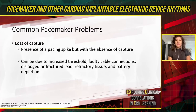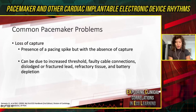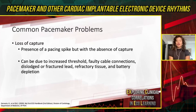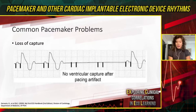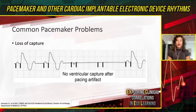The second troubleshooting example is loss of capture. Unlike loss of output where there is not even a pacing spike, in loss of capture you have a pacing spike but with the absence of depolarization. Possible causes include increased threshold, faulty cable connections, dislodged or fractured leads, refractory tissue, and battery depletion. Towards the middle portion of the rhythm strip, you can see pacing spikes no longer followed by P waves or QRS complexes.